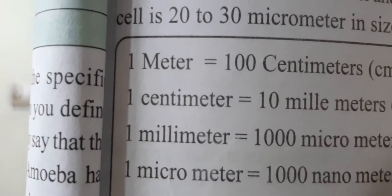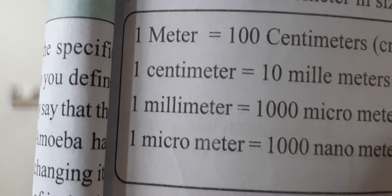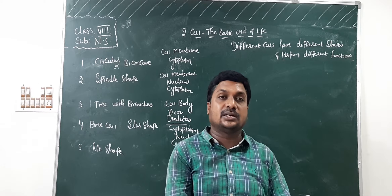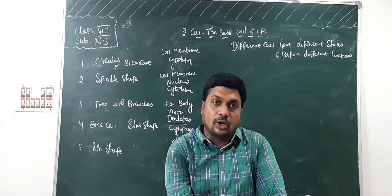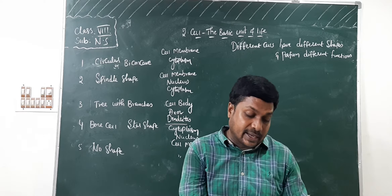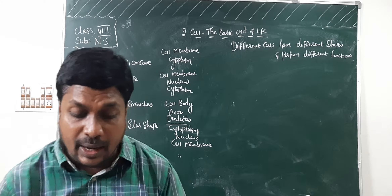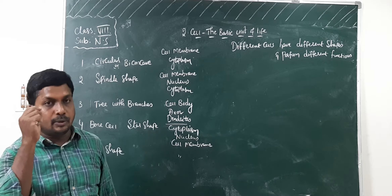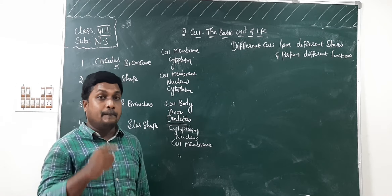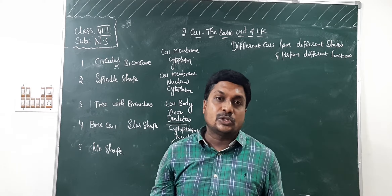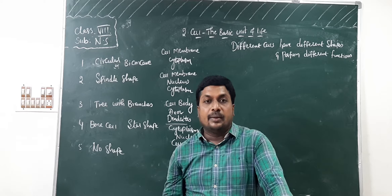Open page number 23. There you can find a box. One meter equals 100 centimeters — meter is the largest measurement. One centimeter equals 10 millimeters. One millimeter equals 1000 nanometers. Nanometer is the simplest measurement unit. So micro-organisms will be measured by nanometers and can be seen only with the help of a microscope.